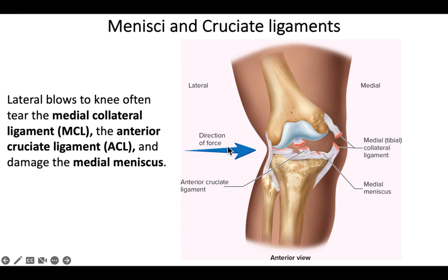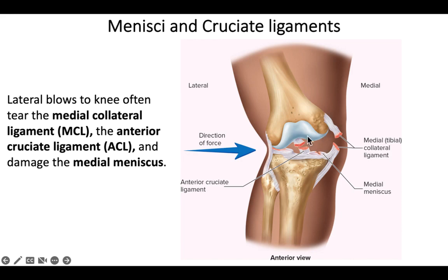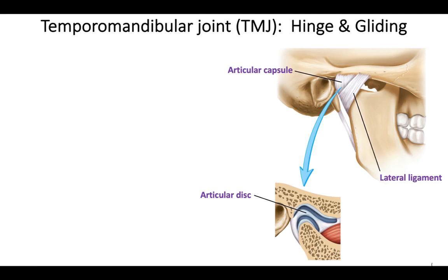One of the most common knee injuries occurs when you receive a forceful blow to the lateral side of the knee — the outer part, near the fibula. This happens in football, soccer, or other contact sports. The resulting movement can tear the medial collateral ligament, tear the anterior cruciate ligament, and quite often tear the medial meniscus as well. Lateral blows to the knee frequently cause damage to all three of those structures simultaneously.